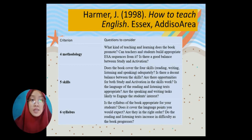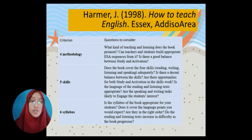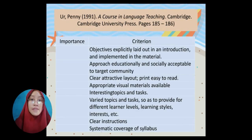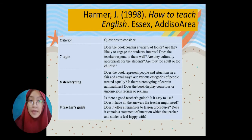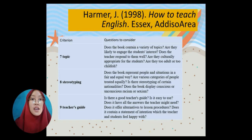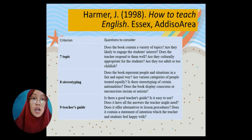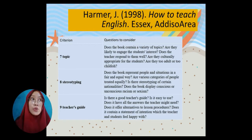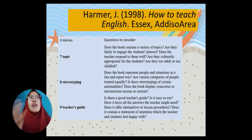The sixth criterion is syllabus: is the syllabus of the book appropriate for your students, your learning outcomes, and your learning goals? The seventh is topic: does the book contain a variety of topics, or just one? The eighth is stereotyping: does the book present and represent people and situations in a fair and equal way? Is there stereotyping of certain nationalities? The textbook should not contain any content that misrepresents or creates a negative interpretation of any country.